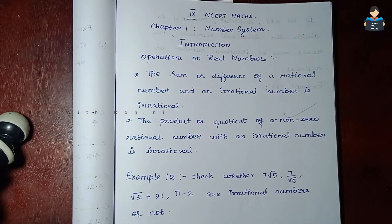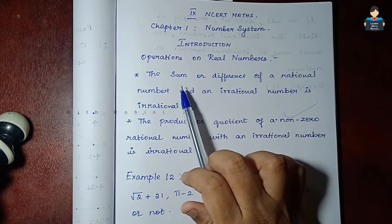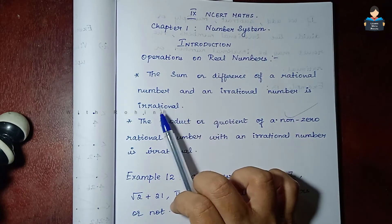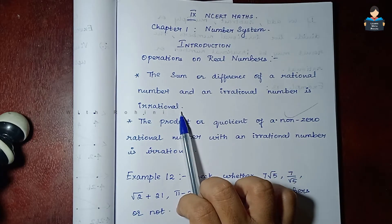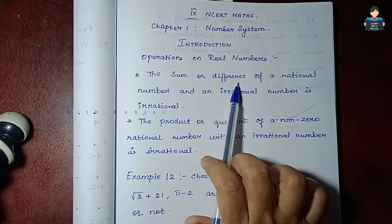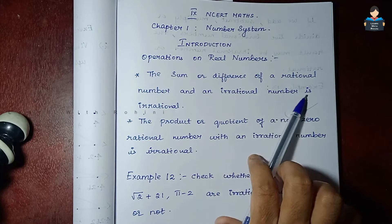Hello everyone, welcome to our channel. In this video we cover 9th Standard NCERT Math Chapter 1: Number System. We will look at operations on real numbers — specifically the sum and difference of rational and irrational numbers.